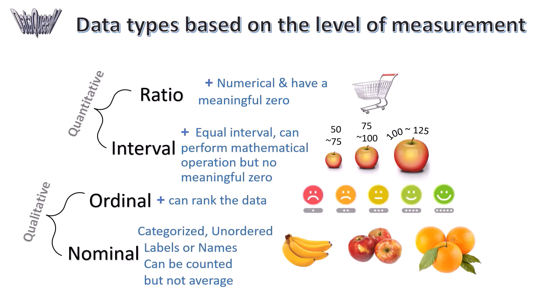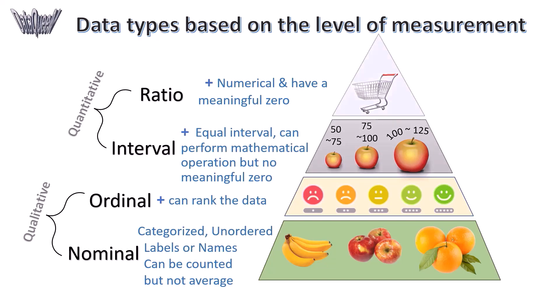Nominal is first level of measurement. Ordinal is second level of measurement. Interval is third level of measurement. Ratio is fourth level of measurement. The general rule is that you can go down in the level of measurement but not up. Variables that are naturally ordinal can't be captured as interval or ratio data but can be captured as nominal.